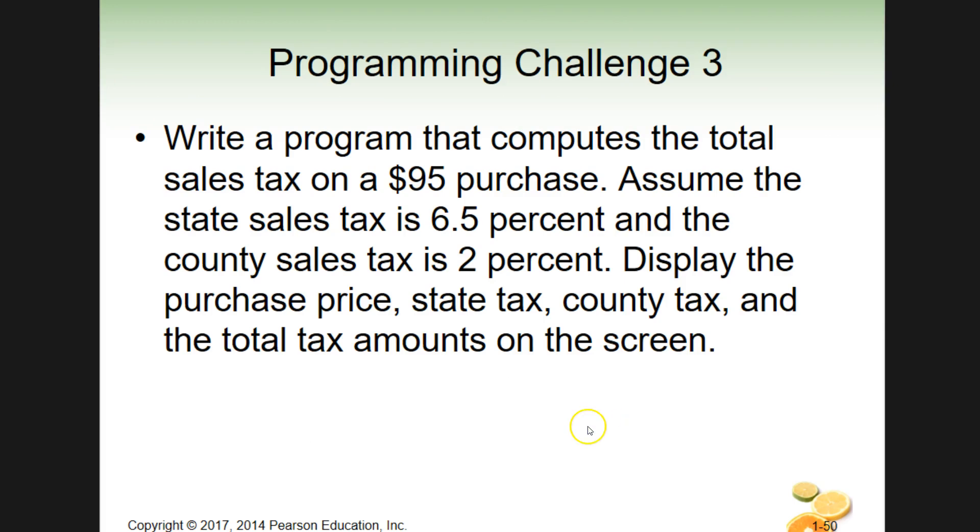And then after that, this goes right along with our little section here too. Another programming challenge. So we have, you're computing a program that computes the total sales tax on a $95 purchase. Assume the state sales tax is 6.5 percent and county is 2 percent, and display those and the totals on the screen. So purchase price, state tax, county tax, and total tax amounts on the screen. And then I guess you could do a grand total too, right? I mean, that just kind of makes sense. Adding those all up to see what it will cost you. And again, these numbers are a little bit different than in the book, but gives you something to mess with. So you see this in canvas as well.